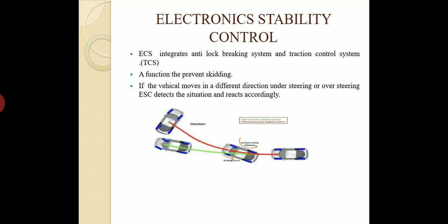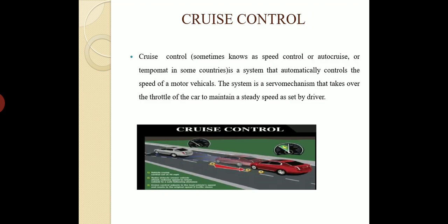Electronic Stability Control, ESC. It integrates the anti-lock braking system and traction control system. Its function is to prevent skidding. When applying the brake suddenly and the vehicle starts to skid, ESC intervenes to stop it. That function is called ESC.